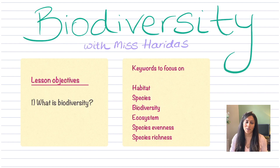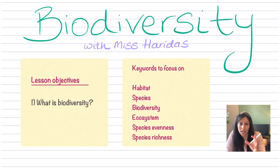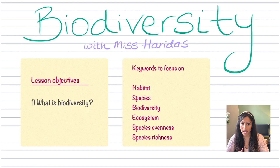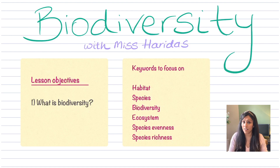So if we look at biodiversity, the main objective is you want to understand what biodiversity is. There are specific keywords you want to pay attention to — things like what does it mean by habitat, what does it mean when I say species, ecosystems, and what does species evenness versus species richness actually really mean?